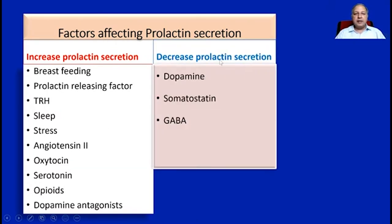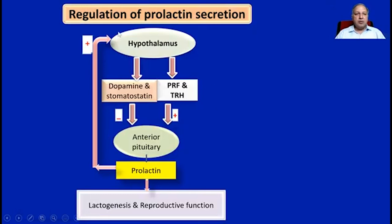The factors that decrease prolactin secretion are mainly dopamine analogues, somatostatin, and GABA, with somatostatin released from the hypothalamus. The hypothalamus overall has a net negative control over the anterior pituitary lactotrophs, which cause the secretion of prolactin hormone. The inhibitory control is via dopamine and somatostatin, while the stimulatory control on lactotrophs is via the prolactin releasing factor and thyroid releasing hormone.